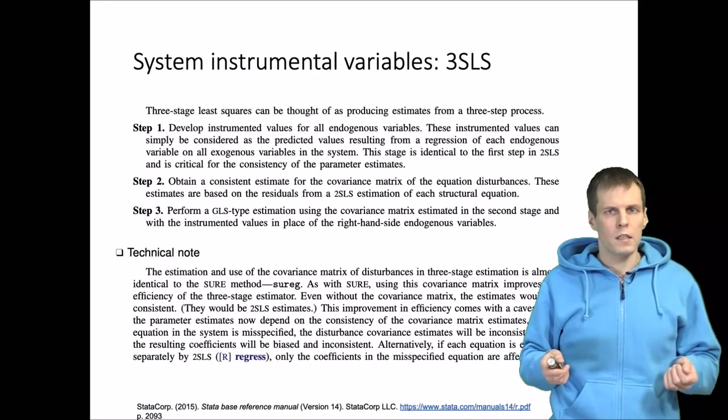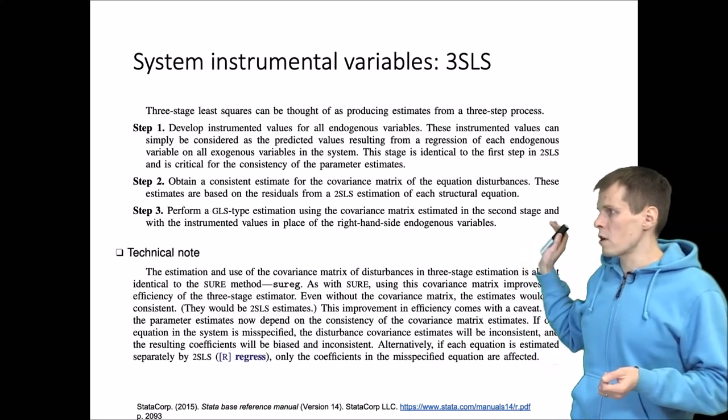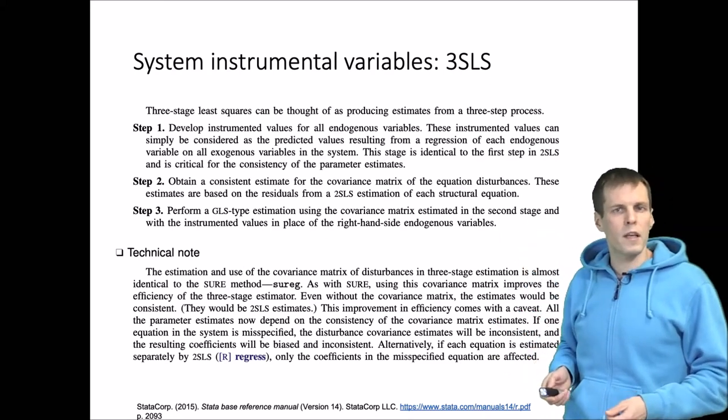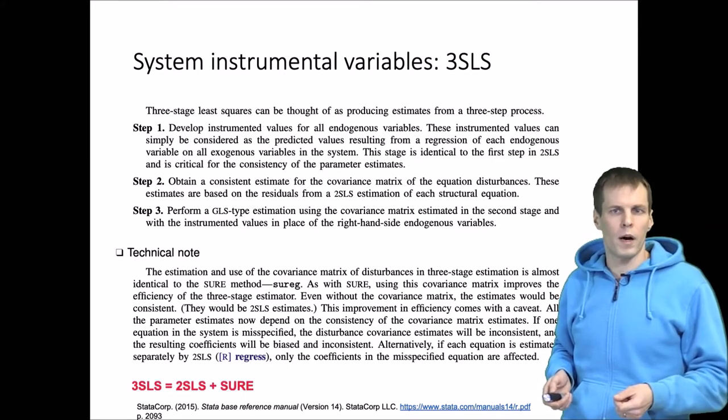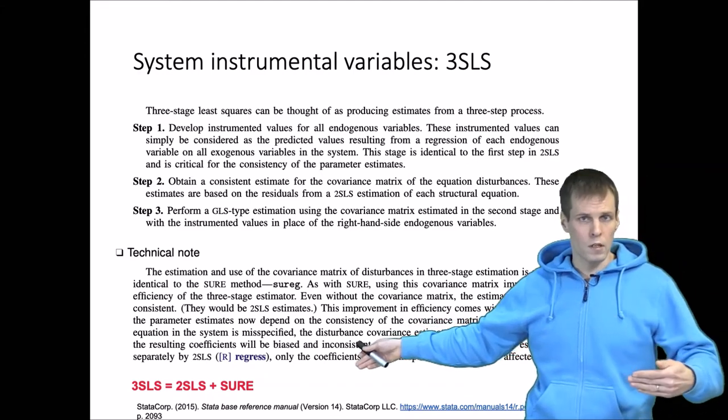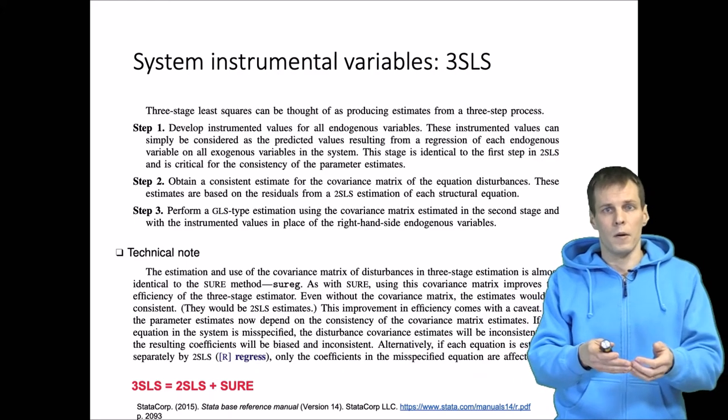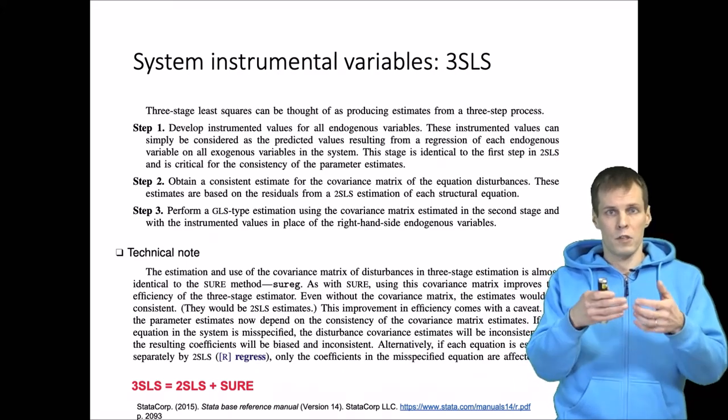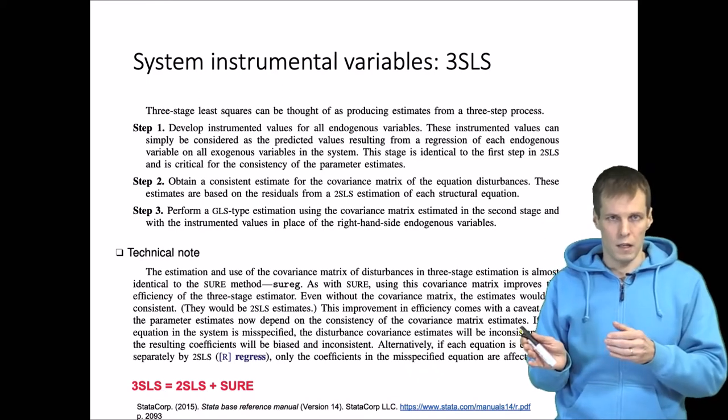The idea of three-stage least squares is that we take two-stage least squares and then we take seemingly unrelated regressions and combine them. So 3SLS is basically 2SLS plus an additional step that estimates the feasible generalized least squares equation using the two-stage least squares results.